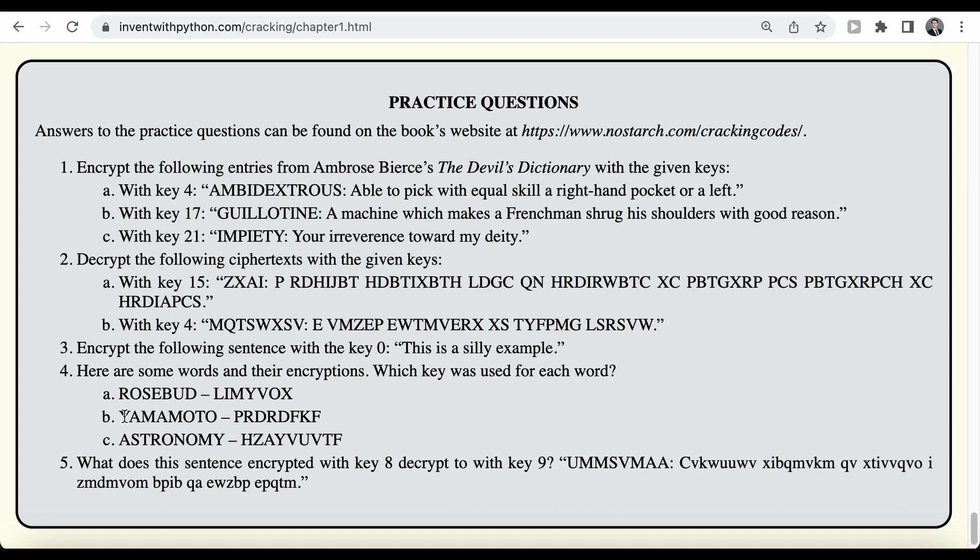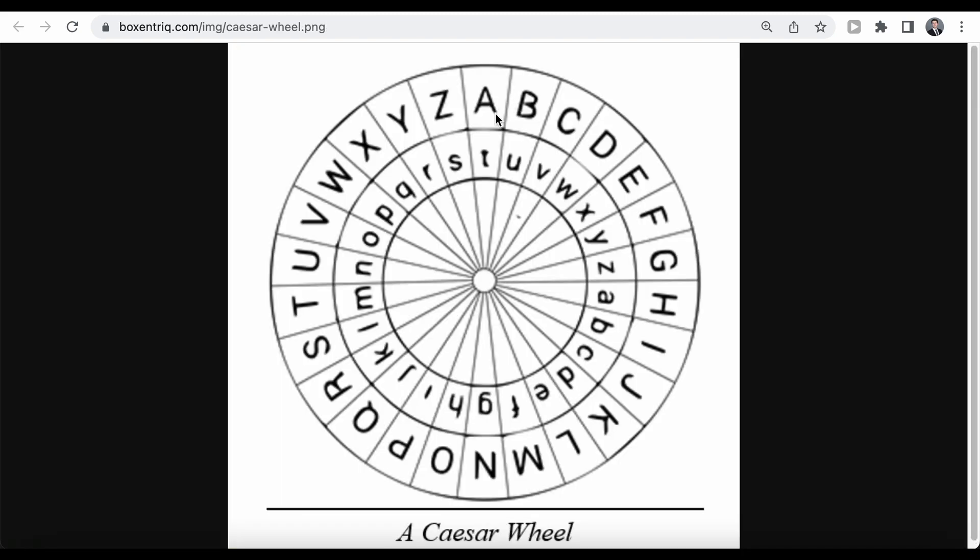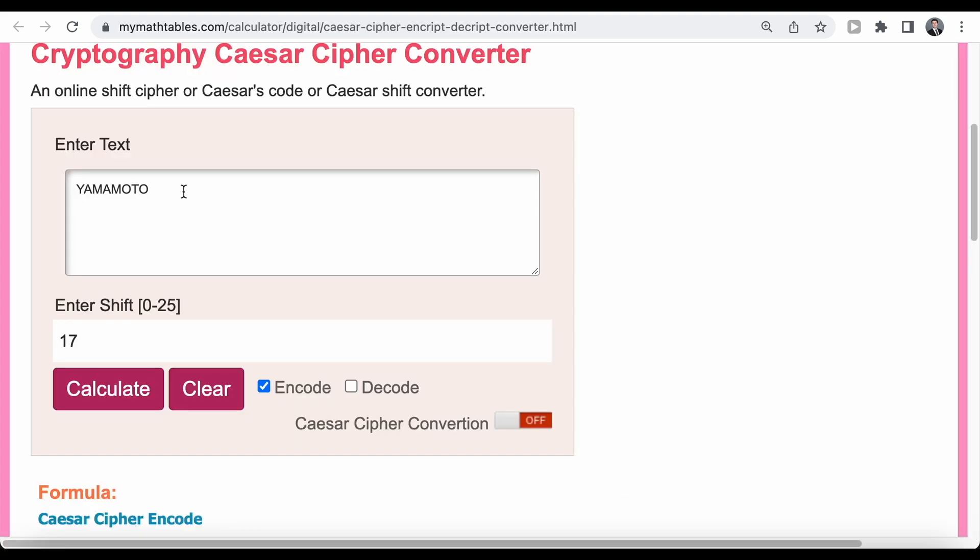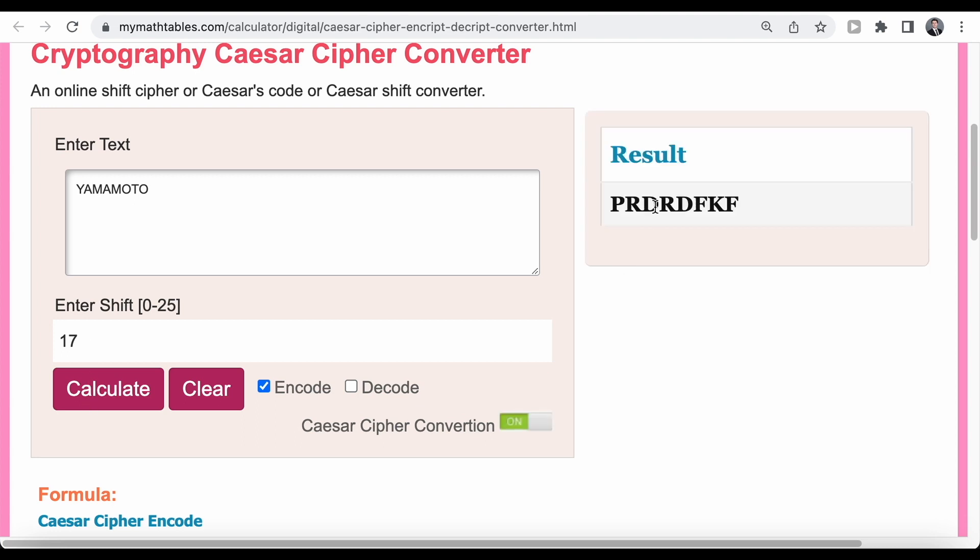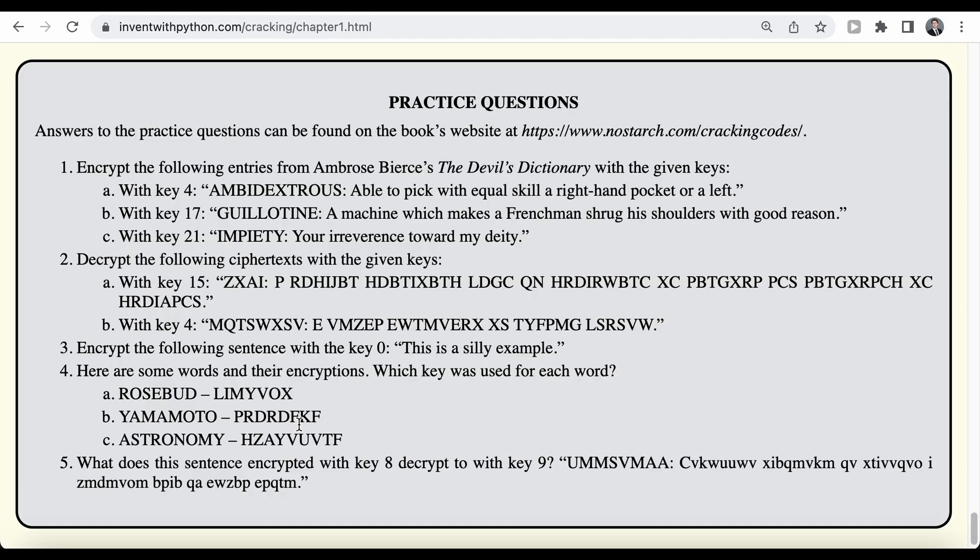Now if you repeat the same steps for the second word here, so we need to switch from Y to P. We can look at our cipher wheel and we can see we need to switch from Y to P. And these are 17 positions. So again, we can type this word into our converter, select encode, and enter a key of 17. And we get back this result, which of course matches our cipher text here.